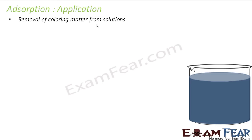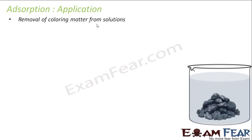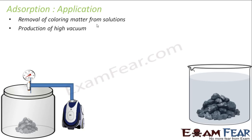Animal charcoal removes the color of a solution by adsorbing the colored impurities. The moment you add charcoal, after some time the solution becomes almost colorless.